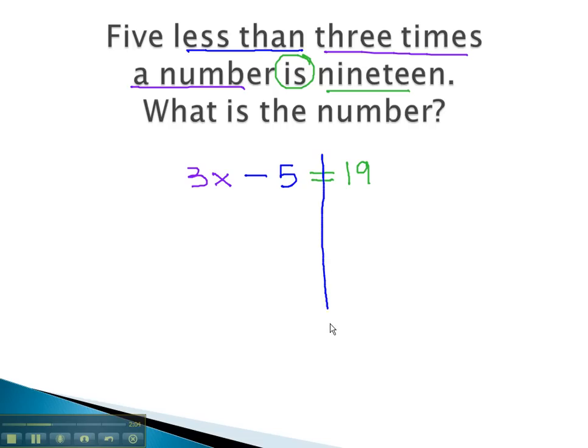We can quickly solve this equation by balancing through the equal sign and adding 5 to both sides. 3x equals 24.